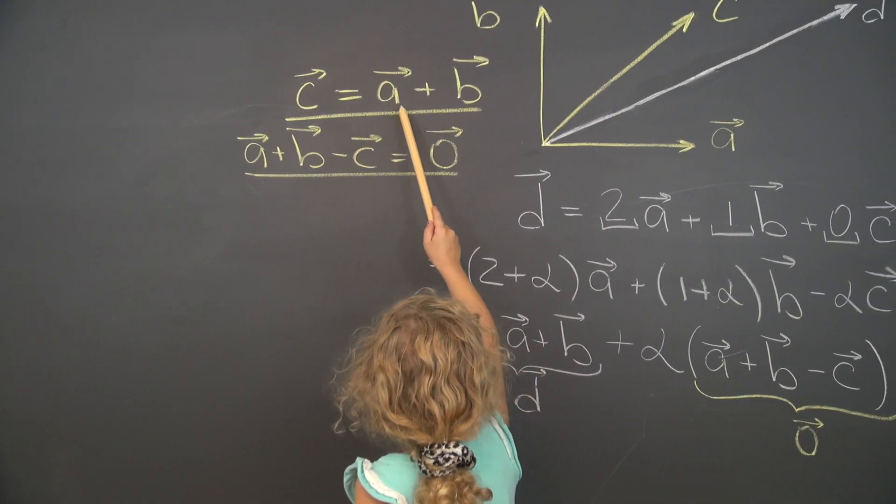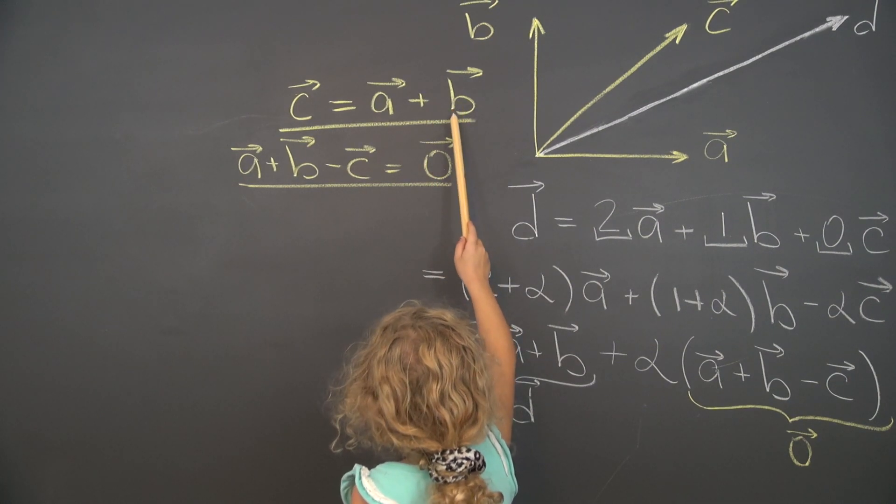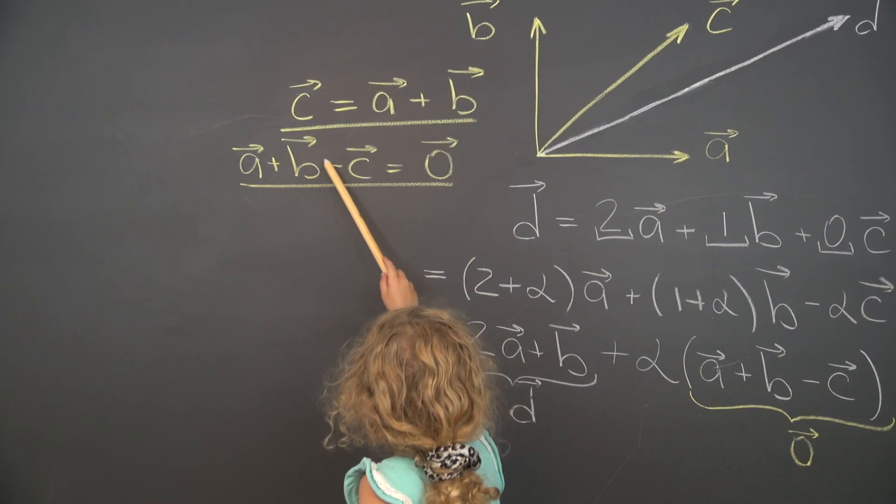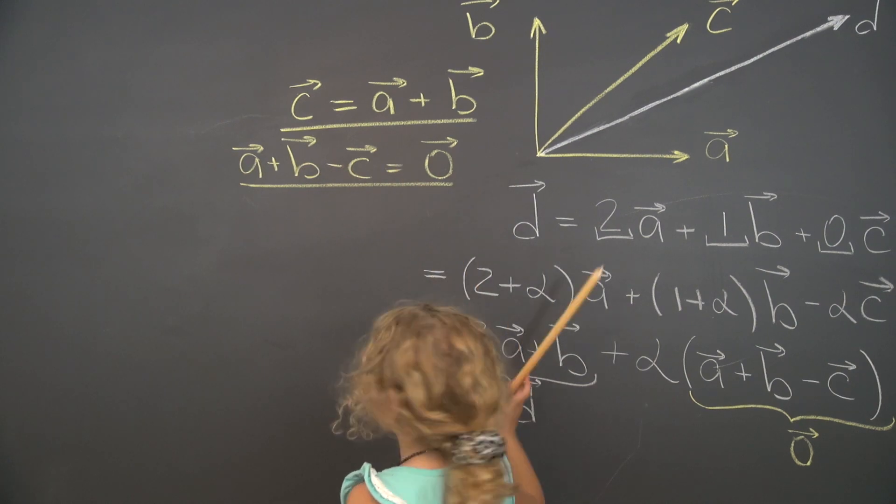C equals A plus B. That would be A plus B minus C equals zero. I'll be right back now. How about this?